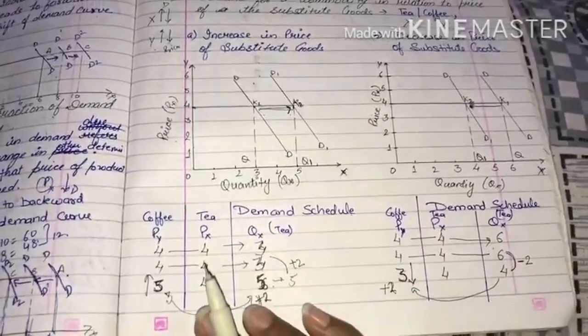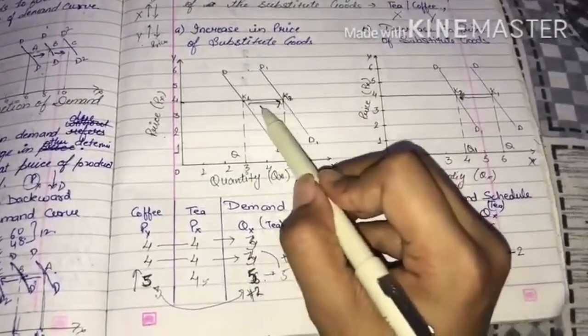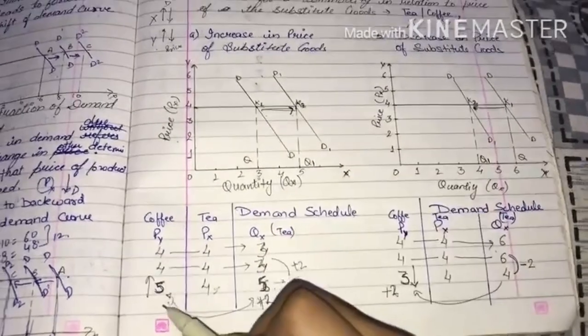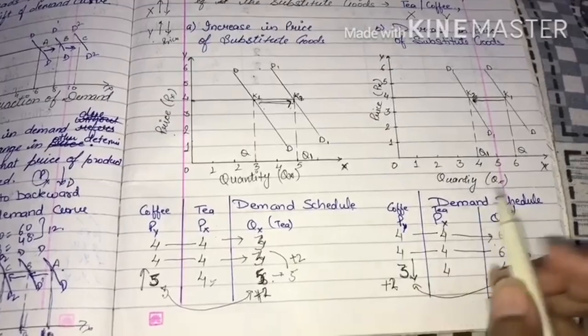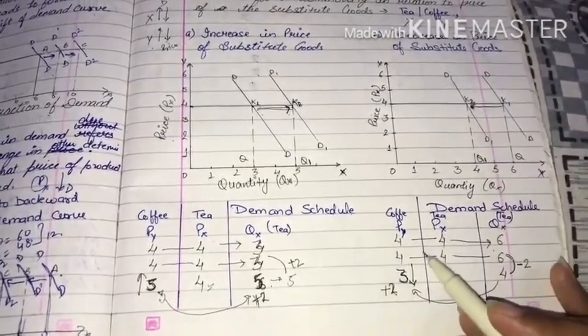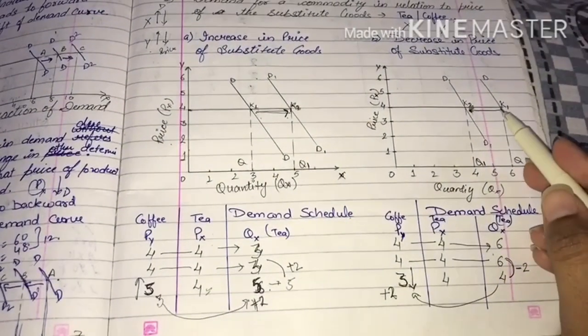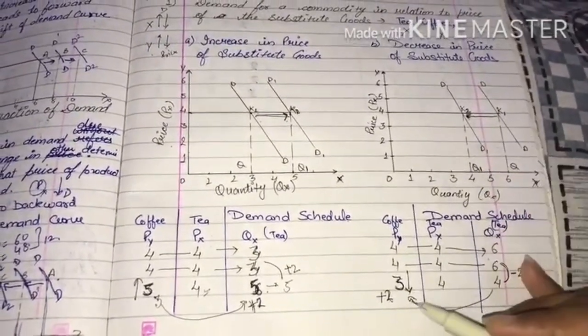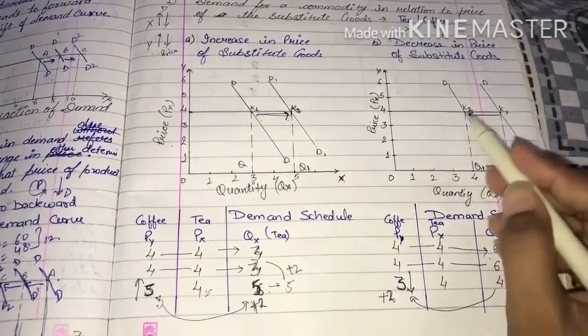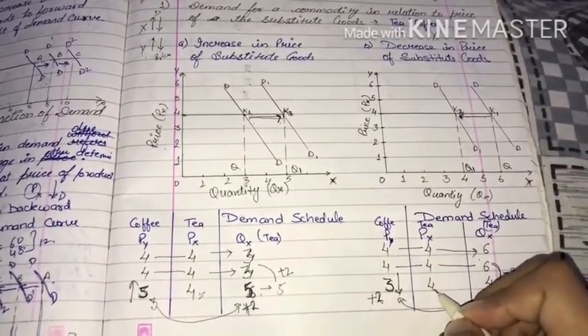From both situations you understand that if coffee's price increases, my product's demand increases even without changing my product's price. Coffee consumers came to demand tea. But if coffee's price decreases, my consumers will go to demand coffee because the 4 rupee price seems expensive compared to coffee.